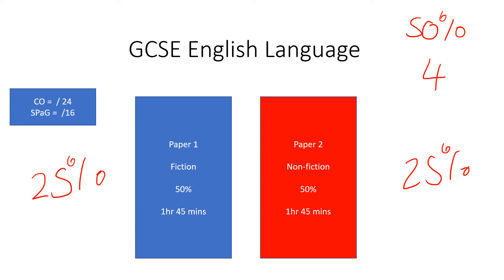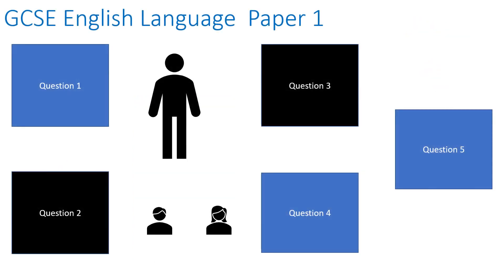Paper 1 is a piece of creative writing, and like Paper 2, you are assessed on two things. You're assessed on your content and organisation of your writing, and also on what you probably know as SPAG — spelling, punctuation and grammar — but the exam board call it something different. You get more marks for your content and organisation than you do for your SPAG.